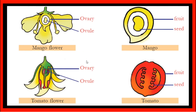In English, we call it an ovule. In mango flower, we call it an ovule and seed. In the case of tomato flower, the ovule is converted into seed and the ovary is converted into fruit.